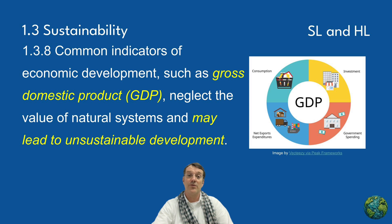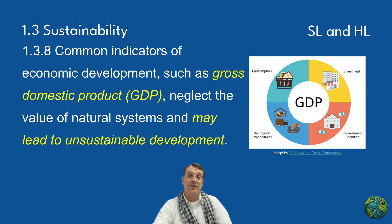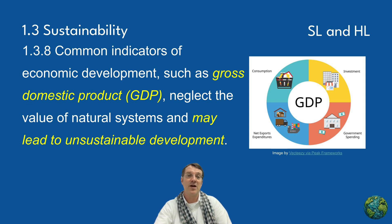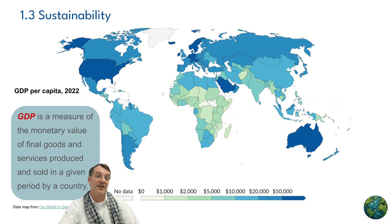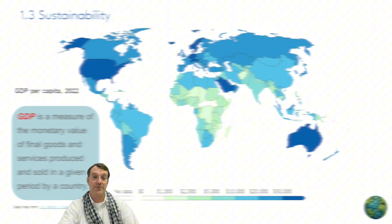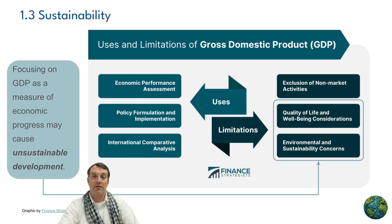Transitioning to economic indicators and sustainable development: a common indicator of economic development is Gross Domestic Product (GDP). GDP is defined as the monetary value of goods and services produced by a nation. Unfortunately, GDP often neglects the value that natural systems play in the economy — it focuses solely on monetary value of ecological goods and doesn't account well for ecological services. A global map shows significant economic disparities, with darker areas indicating higher GDP.